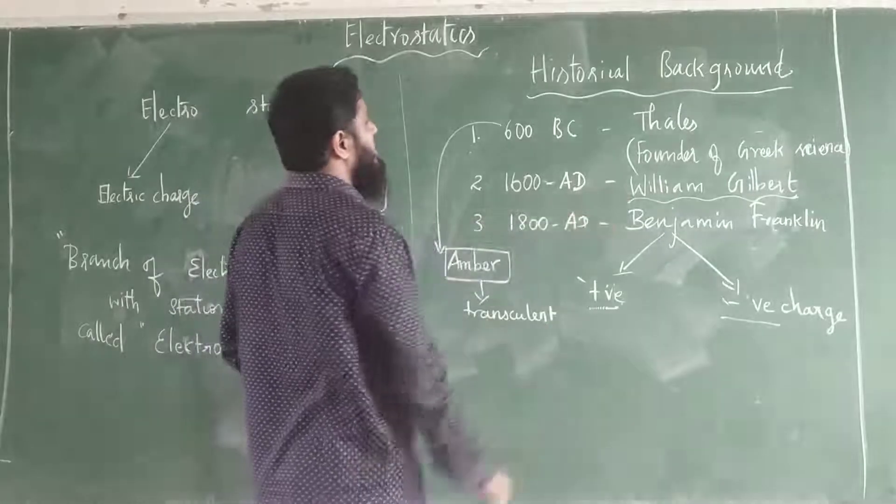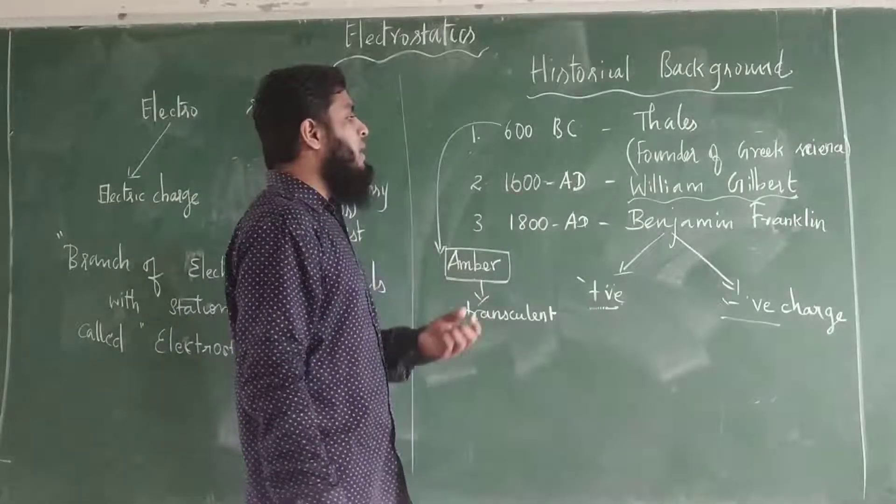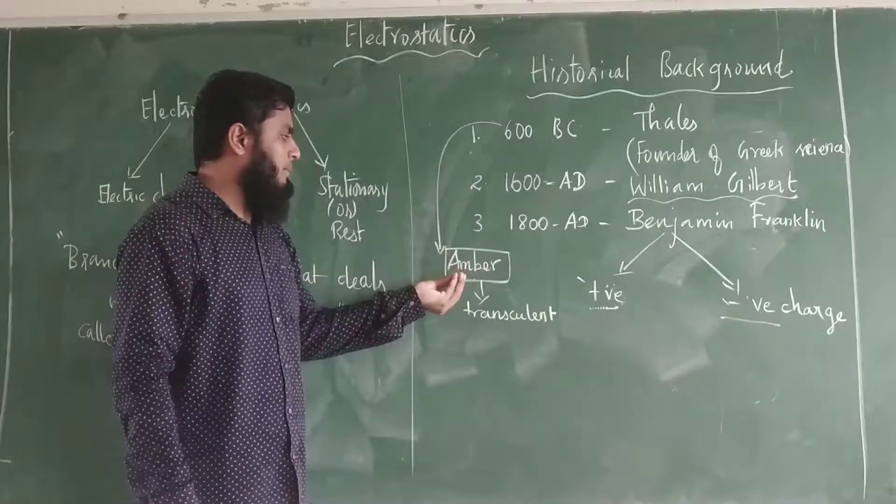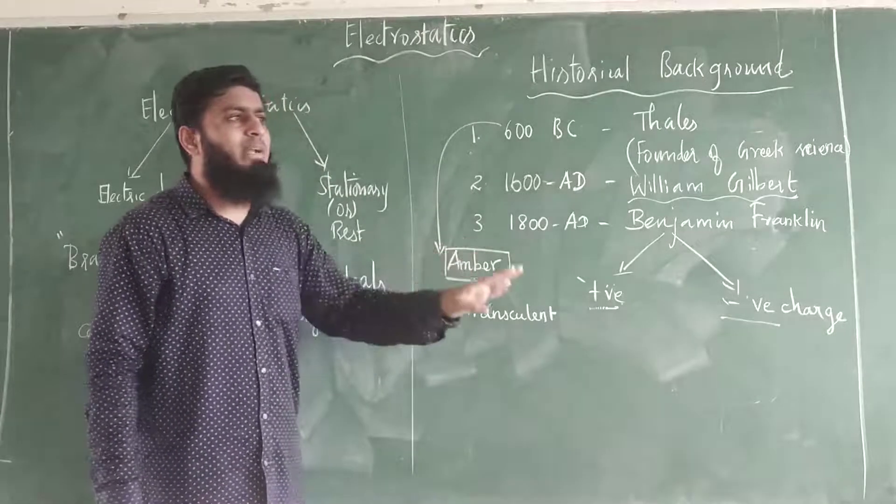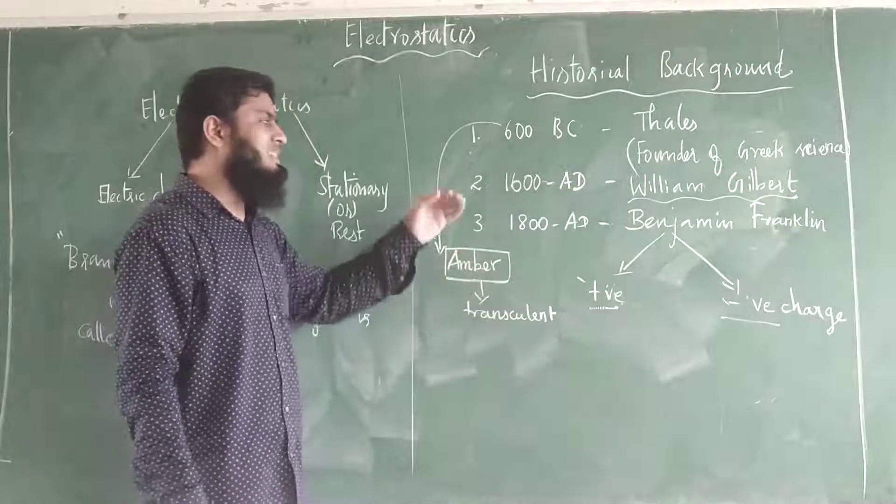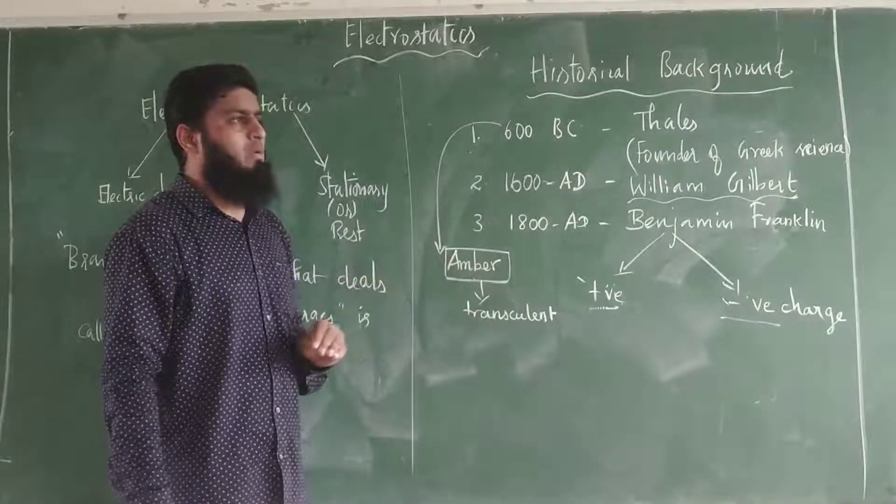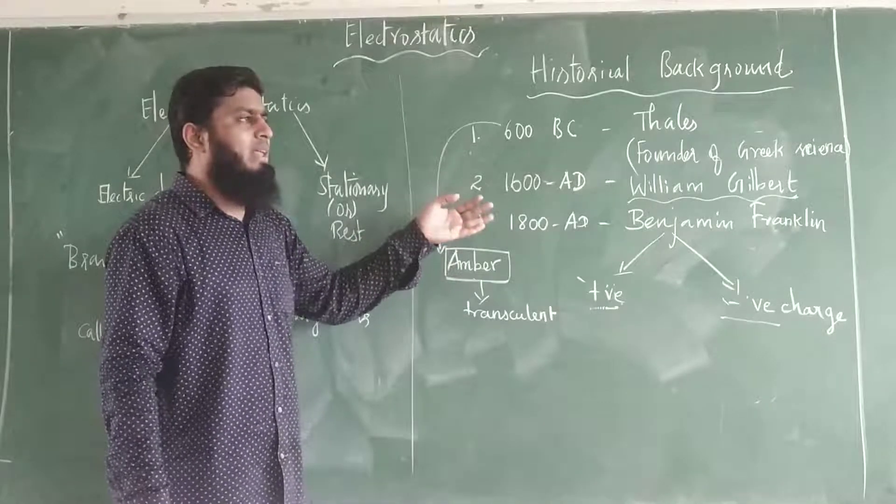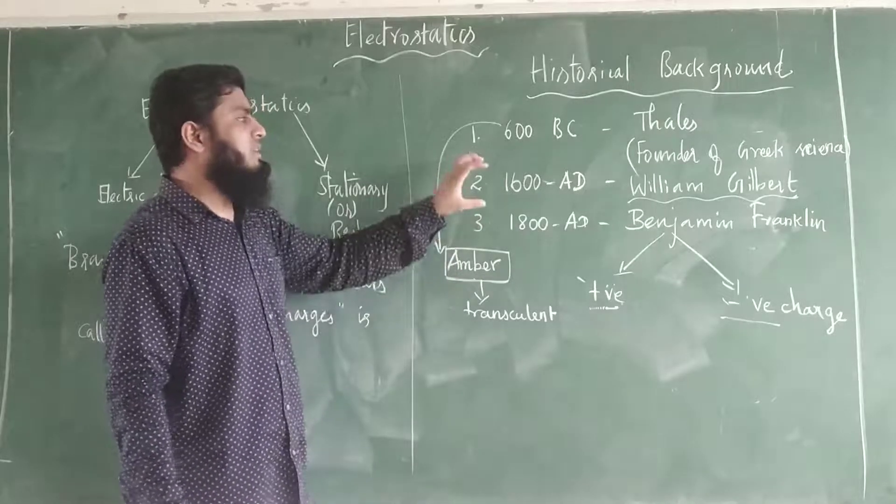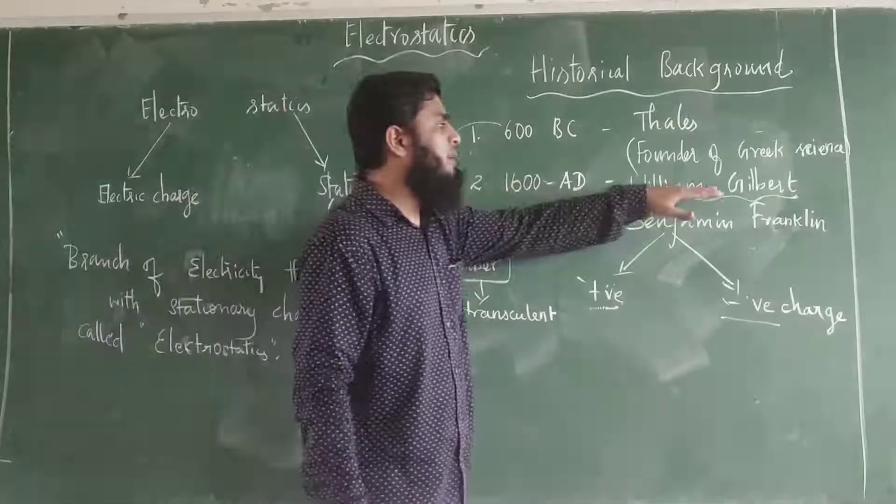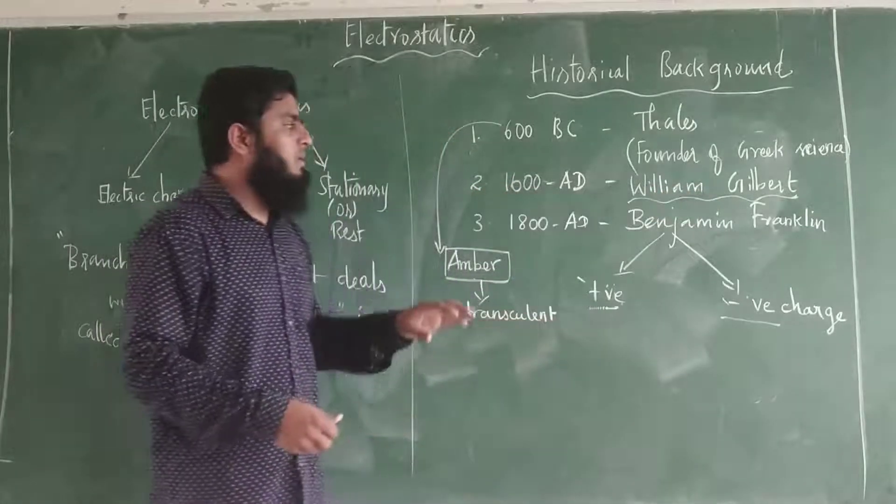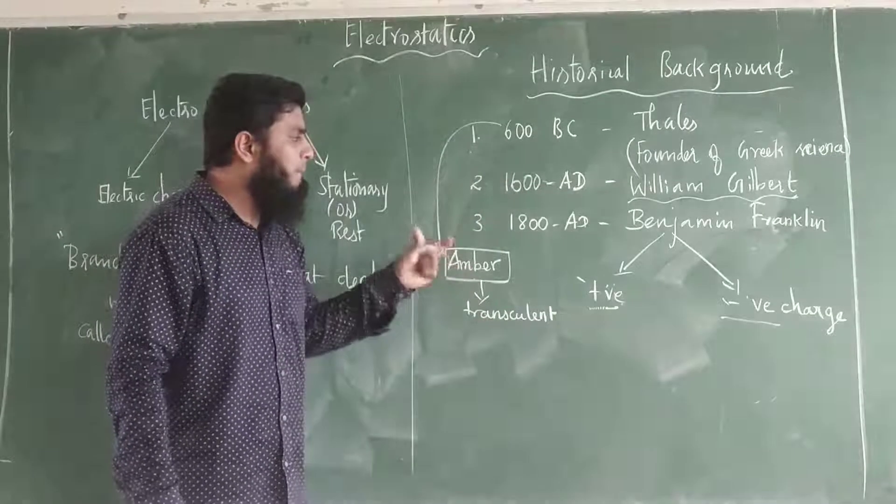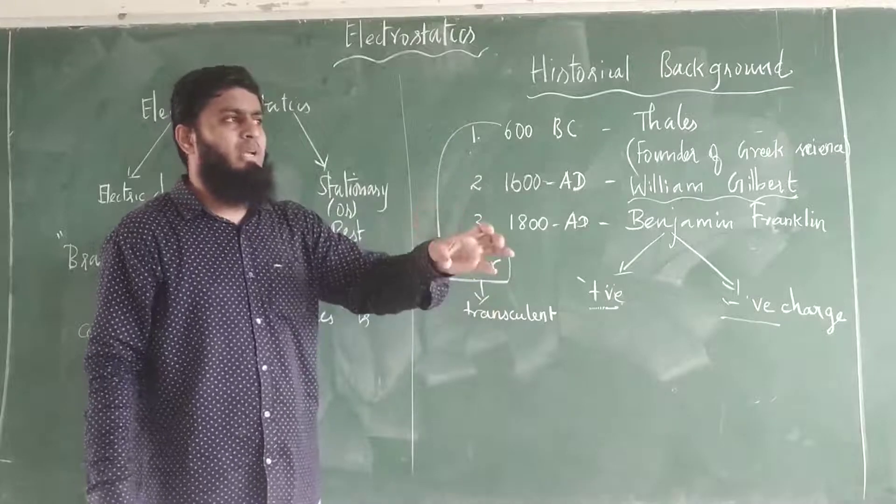In the 17th century, brilliant scientists including William Gilbert discovered that not only amber rod but also glass rod and rubber rod exhibit similar properties. These were the main materials they used to study electrical phenomena.